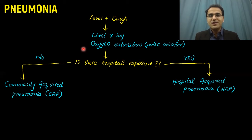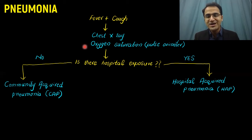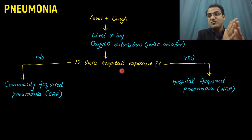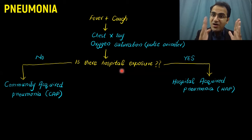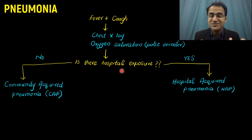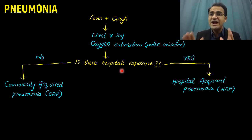After doing the chest x-ray and checking oxygen saturation, you need to determine whether the patient had any hospital exposure. If the patient had no hospital exposure and developed pneumonia, that is community-acquired pneumonia. If the patient developed pneumonia 48 hours after admission to the hospital — where they initially came in for another complaint — that is hospital-acquired pneumonia. The importance of this classification is the organisms: hospital organisms are resistant and different from those causing pneumonia in the community.